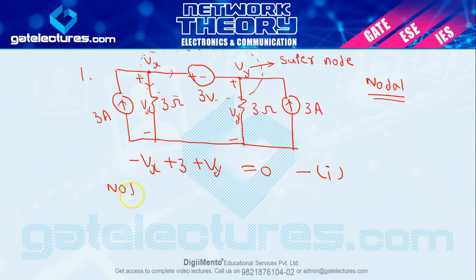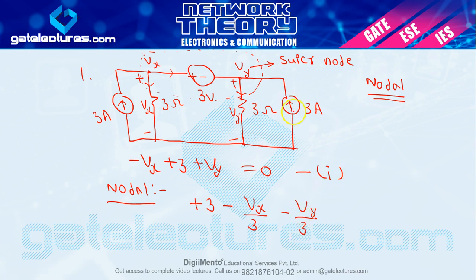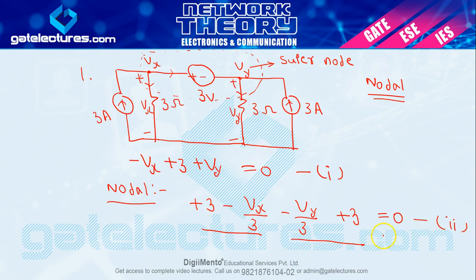अब nodal analysis का use करते हैं। जो 3 ampere है वो Vx पे incoming है, so plus 3। 3 ohm के across current outgoing है, so minus Vx upon 3। Vy में 3 ohm के across current outgoing है, so minus Vy upon 3। उसके बाद Vy पे 3 ampere incoming है, so plus 3 equal to 0 — यह equation number 2। हमने Vx और Vy दोनों के equations एक ही equation में लिख दिए।